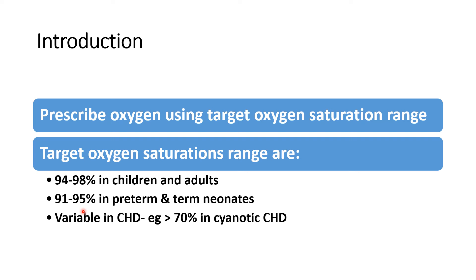Target saturation also varies according to the disease. For example, in congenital heart disease the target saturation range is variable. In cyanotic CHD, more than 70 percent is the target, because unoperated cyanotic CHD patients will not have saturation above 85 to 90 percent even with full oxygen support.